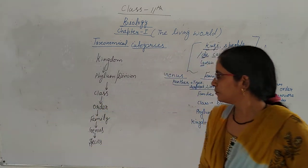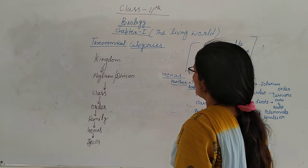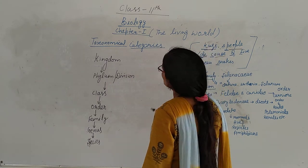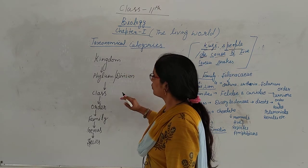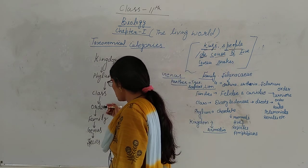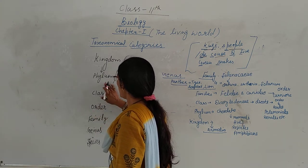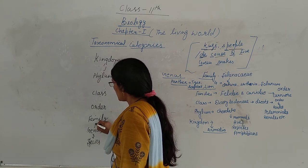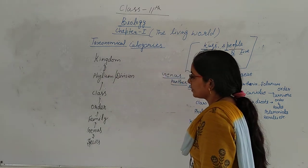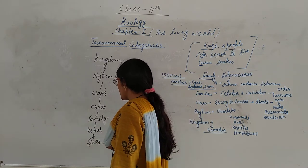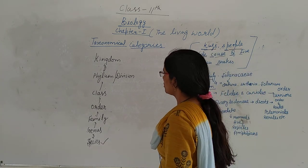Is that clear? So, let's discuss taxonomical categories. If you write them in descending order, put your arrow downward. If you write them in ascending order, change the arrow direction. The ascending order is: Species, then Genus, then Family, then Order, then Class, then Phylum, and then Kingdom. Is that clear? The smallest category is species, and as we move upward, Kingdom is the highest or topmost taxonomical category.